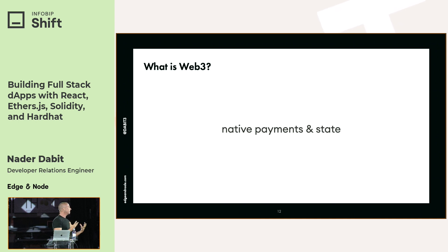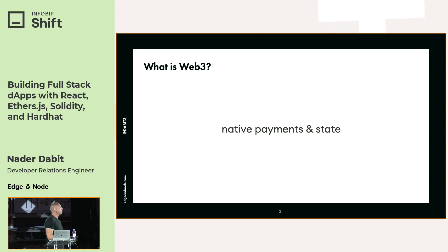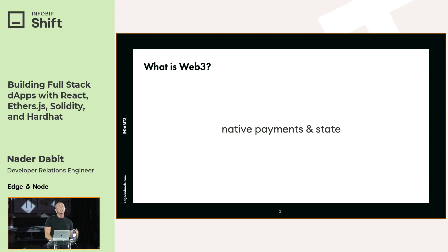The same thing is true for state — we're talking about data. Where is our data stored? We have web servers and the cloud, but these are all centralized servers that often go down. Even at AWS, where I worked for over three years, we have outages. No one can get around this with centralized solutions. Blockchain technology presents solutions to both native payment and native state — and that's why we're seeing all this crazy stuff happening.